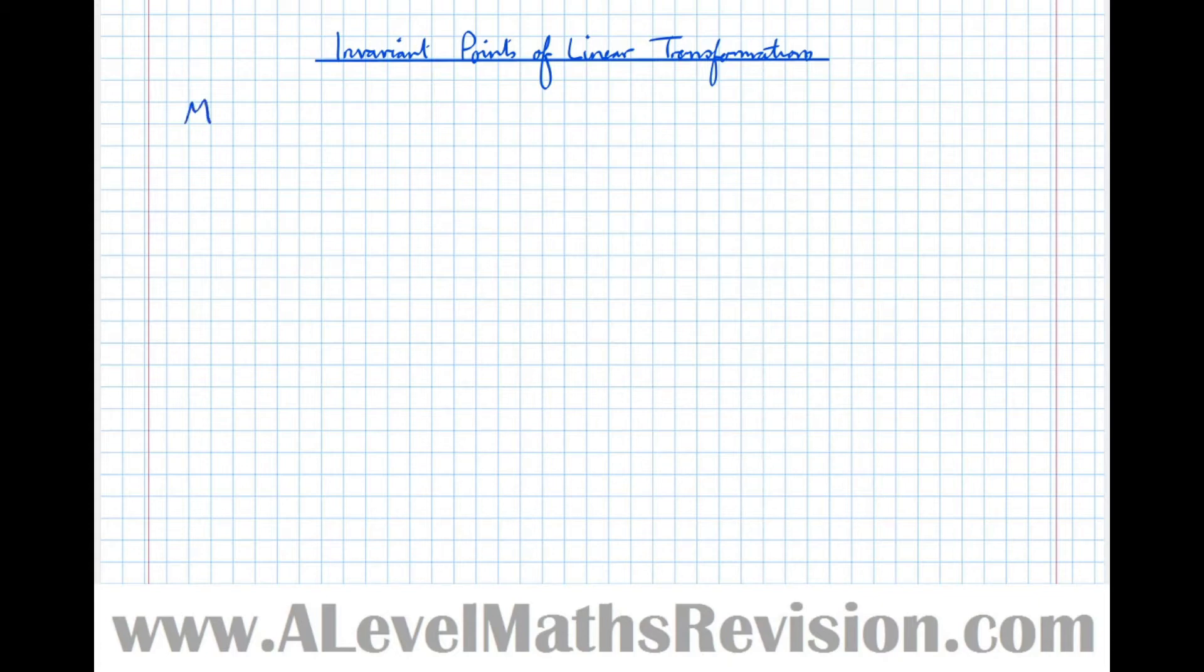Let's define what an invariant point actually is. If we apply a matrix M to a vector (x, y), the point's invariant if when the matrix is applied, we get the same point back, i.e. the point doesn't change.